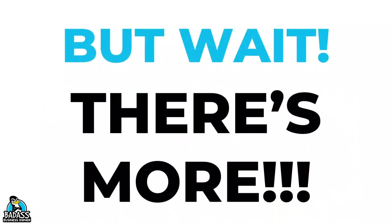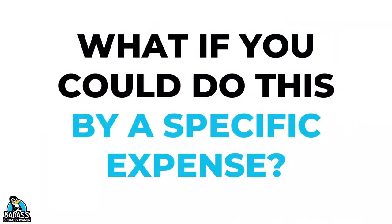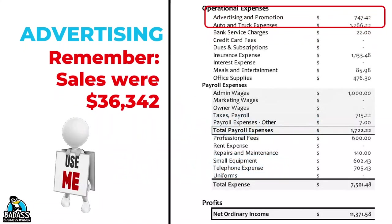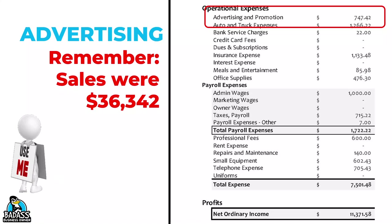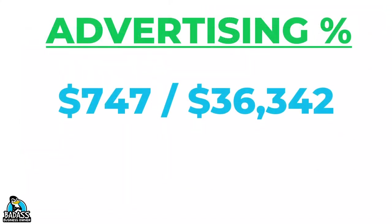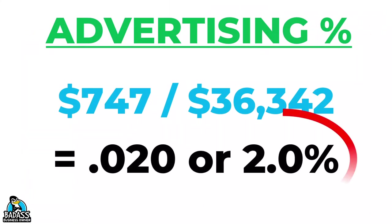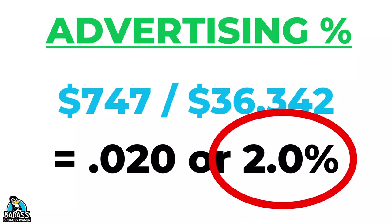Here's the cool thing — you can do way more with this than just the big categories on your P&L. What if you could do this by a specific expense like advertising or repairs to your work vehicles? Let's use our current P&L and look at advertising. The formula doesn't change; it's just the number we plug in. We go back to our P&L and see that we spent $747 on advertising. We divide that by total sales of $36,342 and get 0.020 — move the decimal two places and we have 2%. Since most folks spend 5% or more on advertising, we might be a little low here.